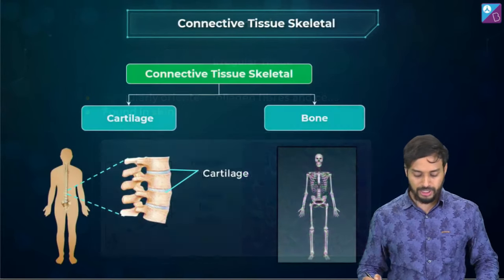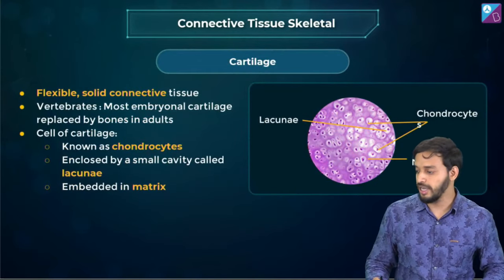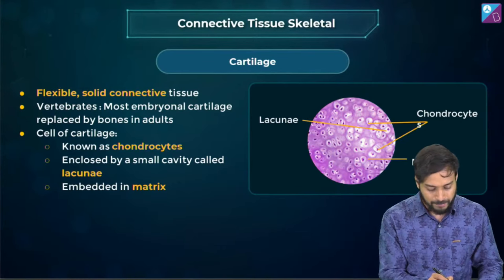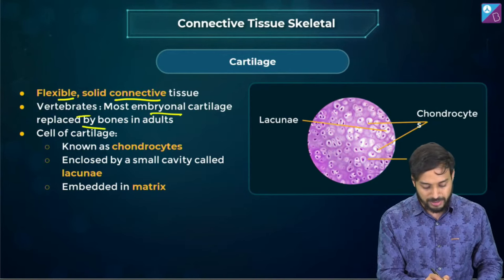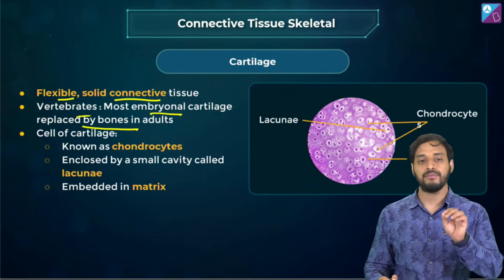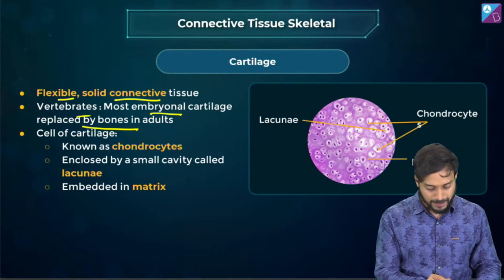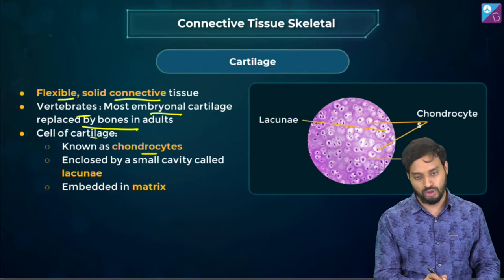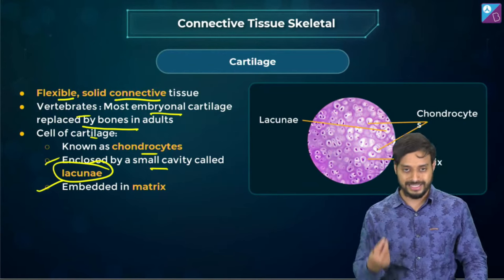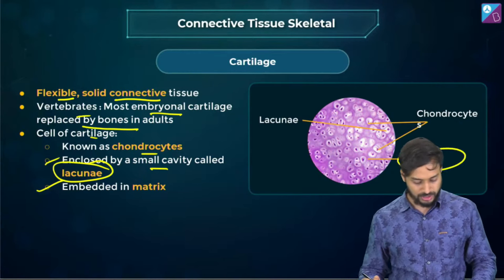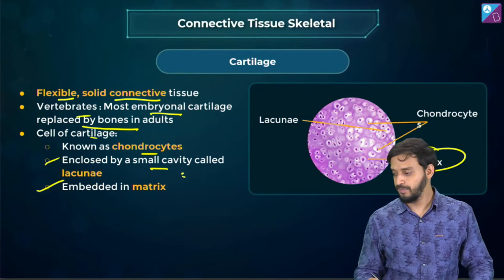Skeletal connective tissue — cartilage and bone. Cartilage is a flexible solid connective tissue found in vertebrates. Embryonic cartilage is replaced by bones in adults. Cells of cartilage are known as chondrocytes, enclosed in small cavities called lacunae, embedded in the matrix.